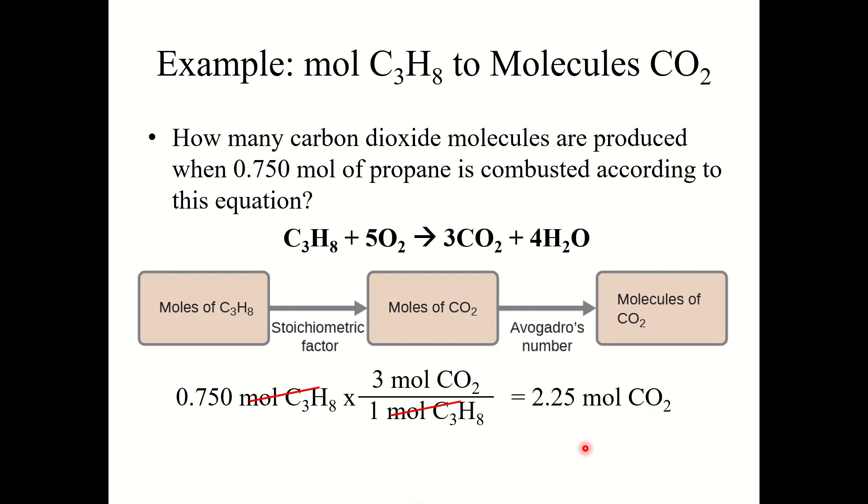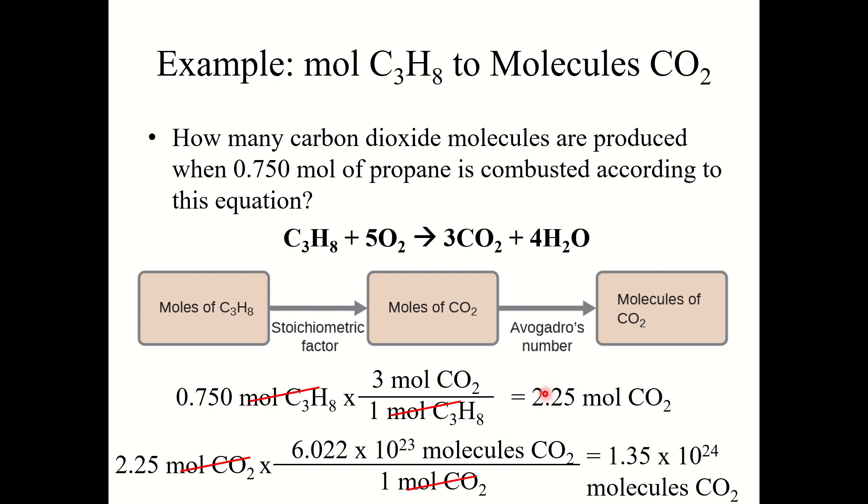And the unit I'm left with would be moles CO2. You can stop there and break this into two parts. So my answer now is 2.25 moles CO2. Now I'm going to use Avogadro's number. 2.25 moles CO2 times 6.022 times 10 to the 23rd over mole CO2. This gives 1.35 times 10 to the 24th molecule CO2. I broke this into two steps. But I do want to note that you can put this conversion factor right here and just chain this all together all in one long step. And you would still get the same answer.